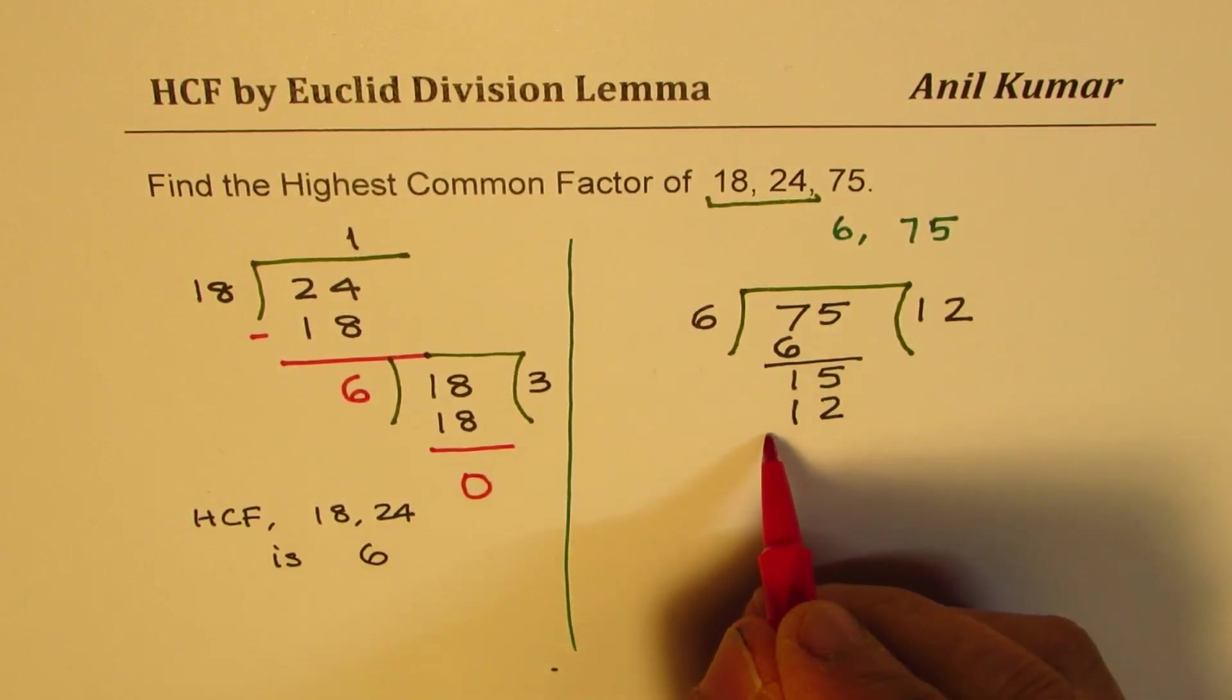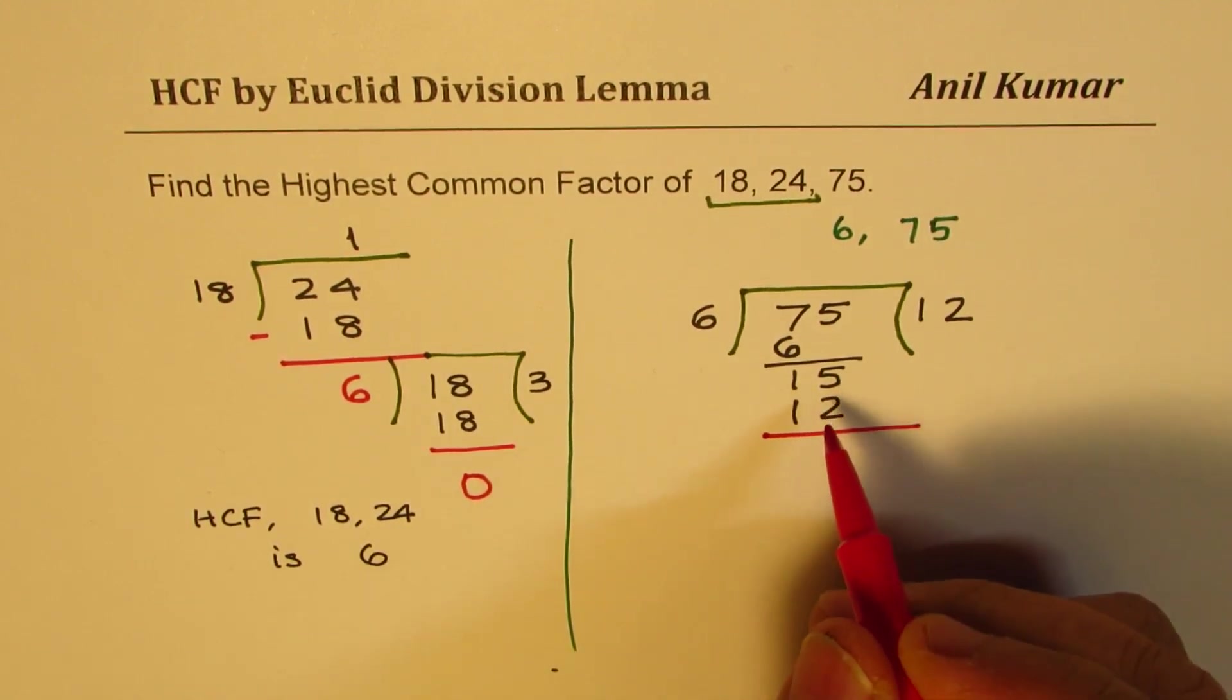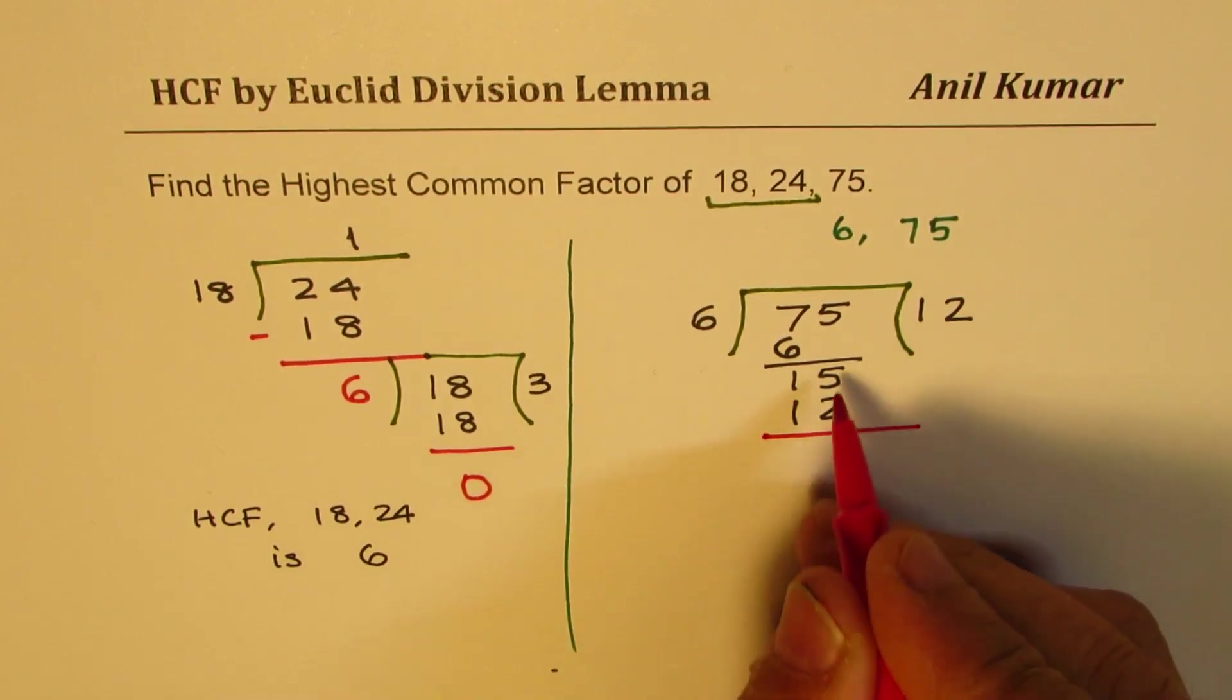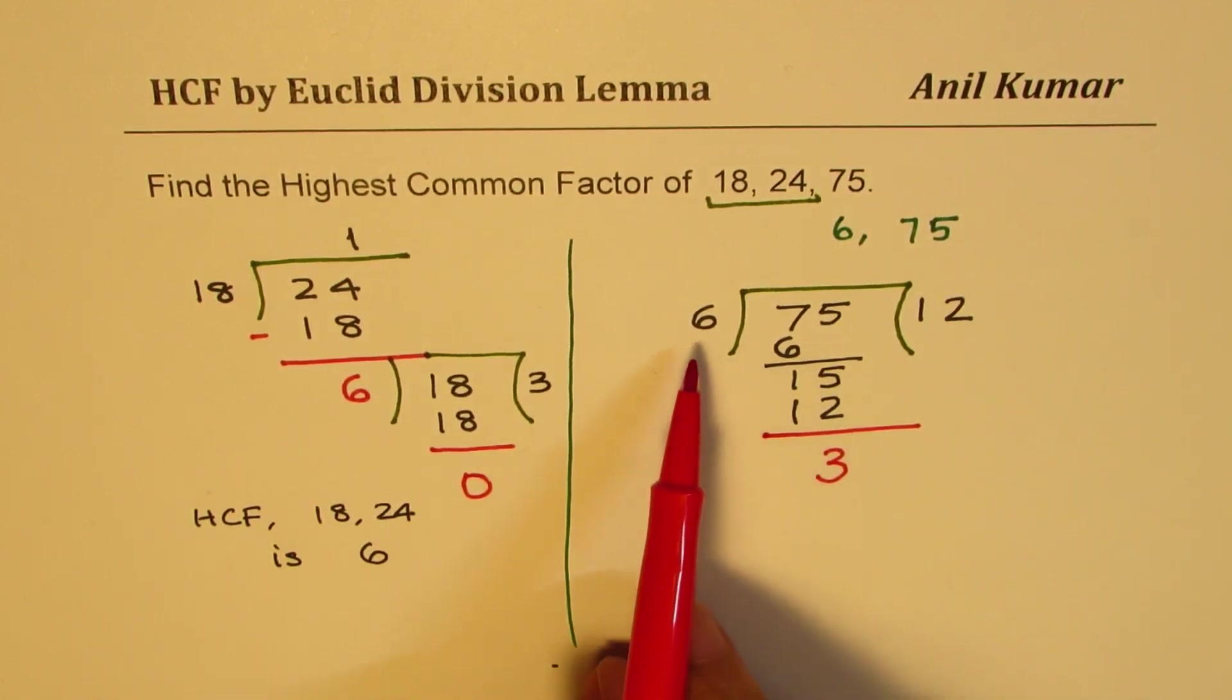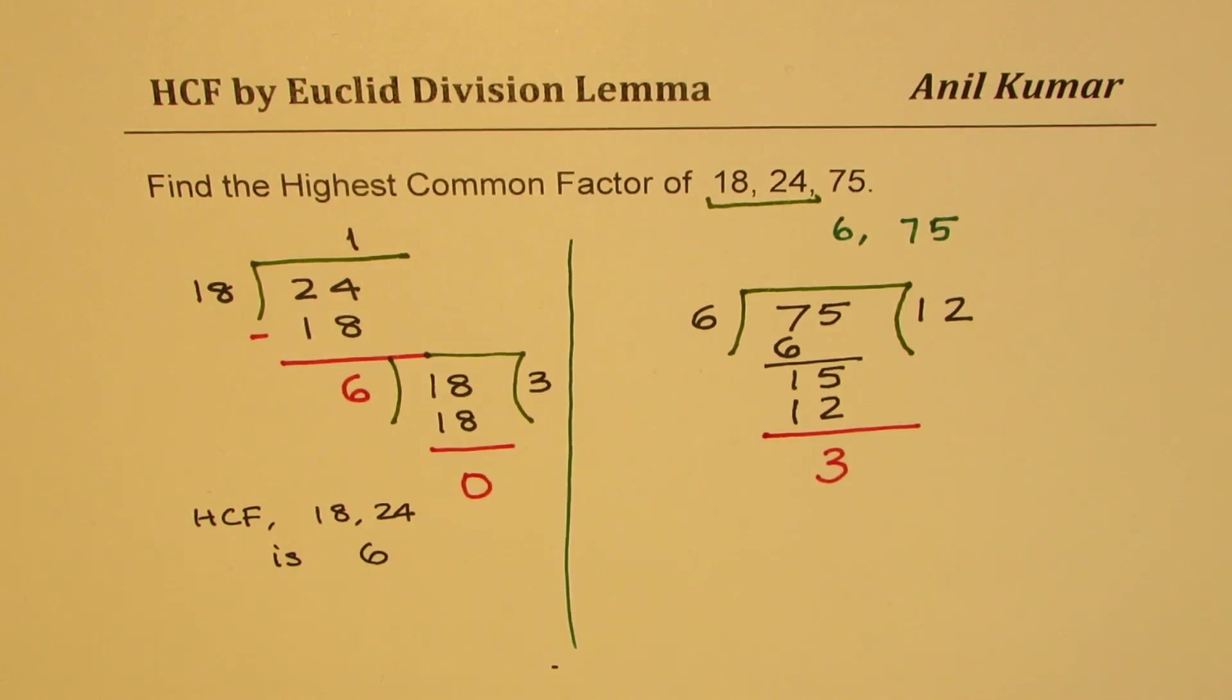But it doesn't remain. It is still not a factor. We do get a remainder here, which is 3. So we'll follow this step again since 6 is not a factor of 75, so it cannot be the highest common factor.